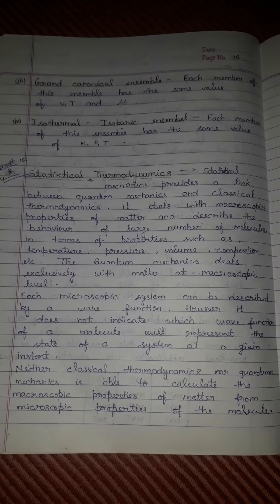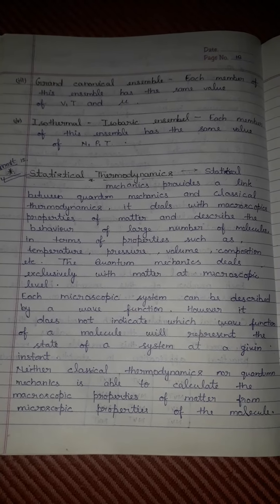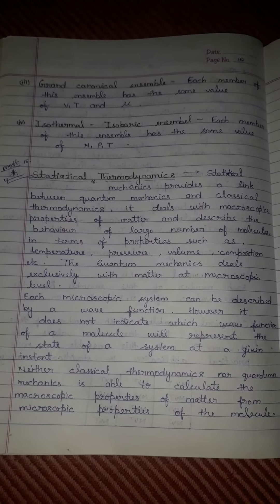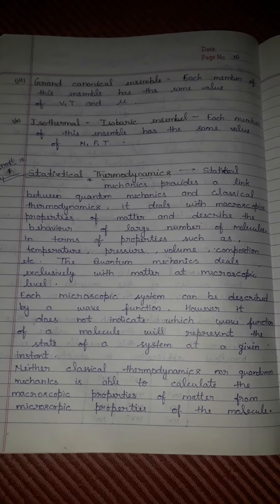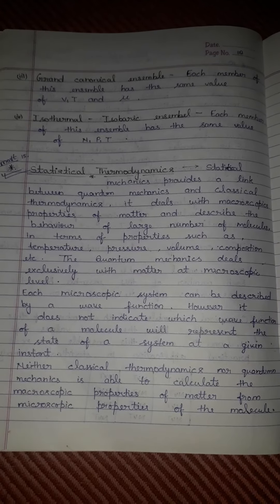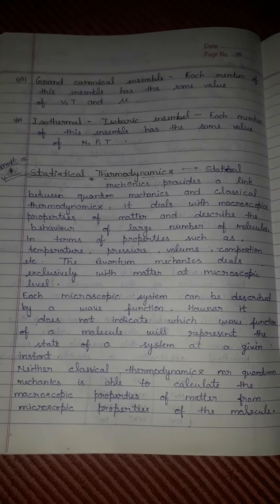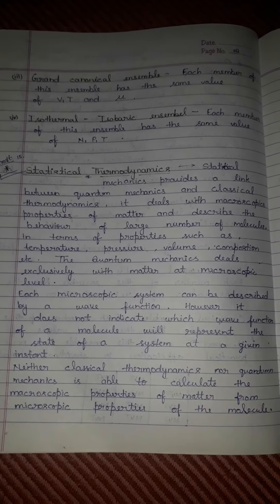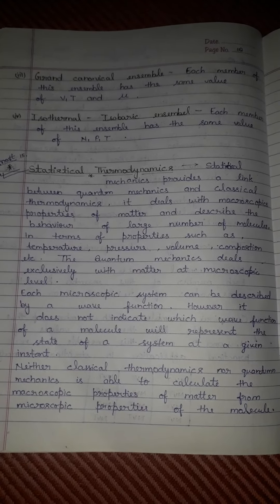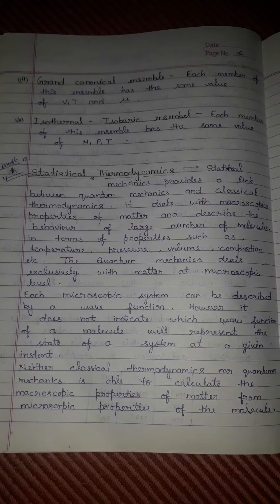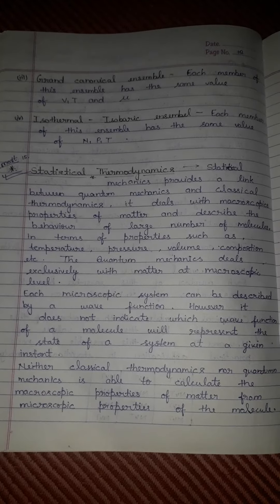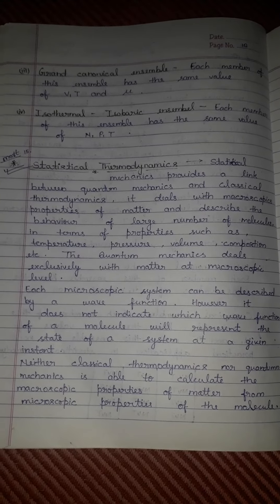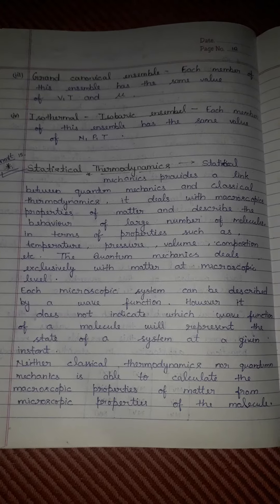Statistical mechanics provides a link between quantum mechanics and classical thermodynamics. It deals with microscopic properties of matter and describes the behavior of a large number of molecules in terms of properties such as temperature, pressure, volume, and composition. Quantum mechanics deals exclusively with matter at the microscopic level.